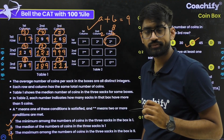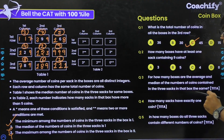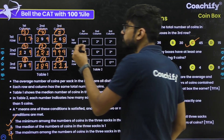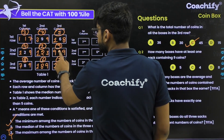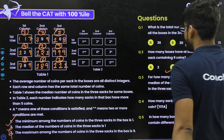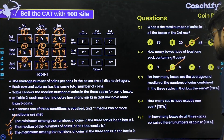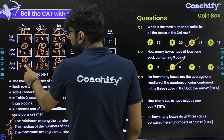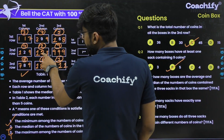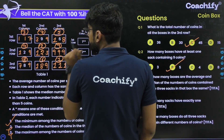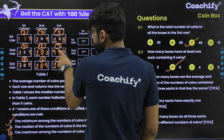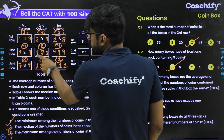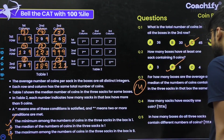Now let's answer the questions. Question 2: How many boxes have at least one sack containing 9 coins? Counting through the grid: 1, 2, 3, 4, 5 — the correct answer is 5. Question 3: For how many boxes are the average and the median of the three sacks the same? We find four such boxes — the correct answer is 4.